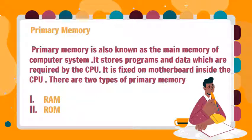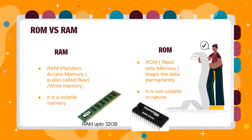What is primary memory? Primary memory, or internal memory, is also known as the main memory of the computer system. It is used to store data and programs running in the computer. It is situated on the motherboard, inside the CPU. Primary memory is of two types: RAM and ROM. RAM stands for random access memory. RAM is also called read-write memory. It is a volatile memory, as the data disappears when power is switched off.